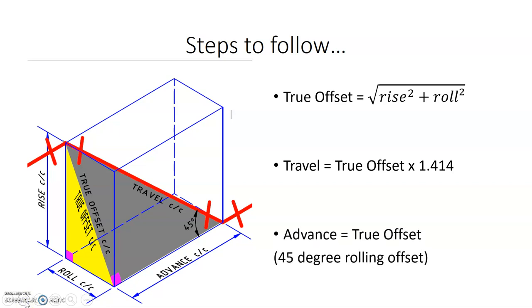And lastly, we want to find the advance. The advance is easy to find too. When we're talking about a 45 degree rolling offset, much like our single 45 degree offset, the advance is equal to our true offset. So that's our formula. So we need to find the advance. As long as we have the true offset, which we did calculate first off the bat, we now have the advance as well. And again, it's only for a 45 degree rolling offset. Other degrees of rolling offset, they would not be equal to each other.